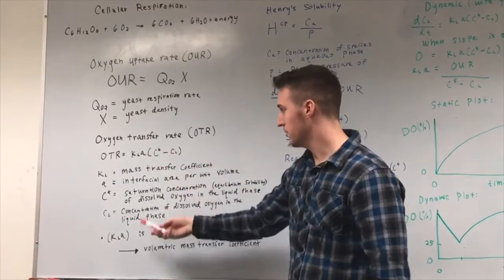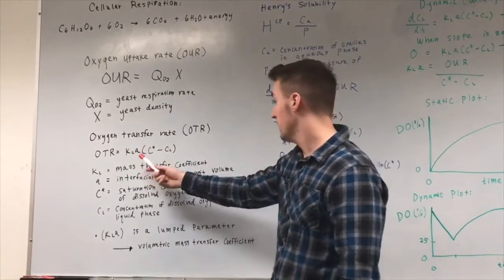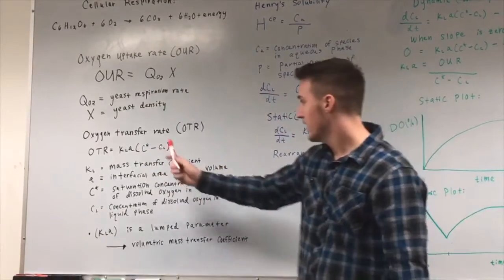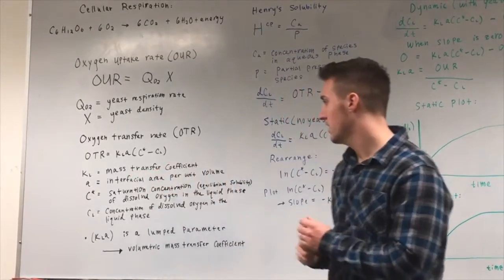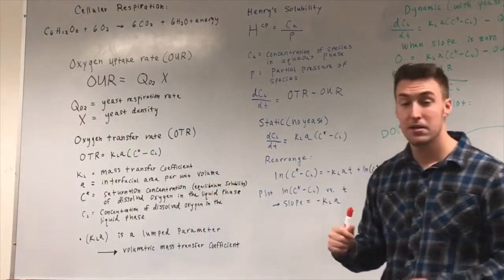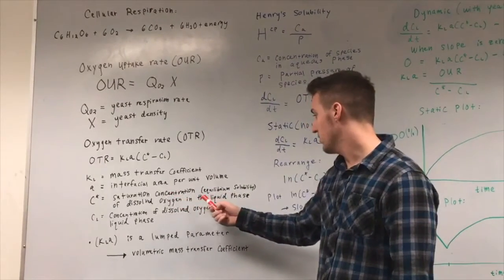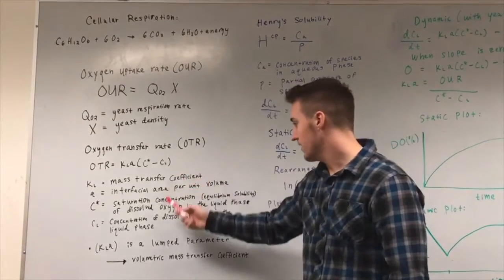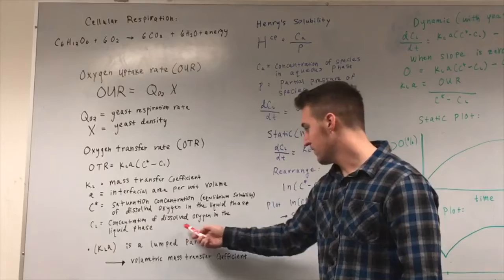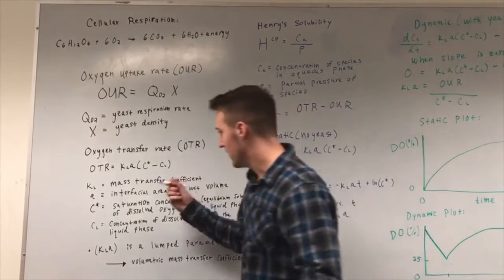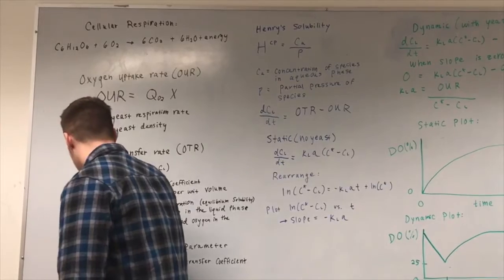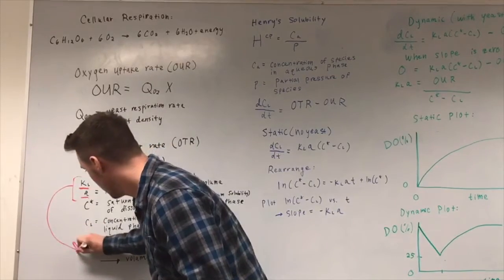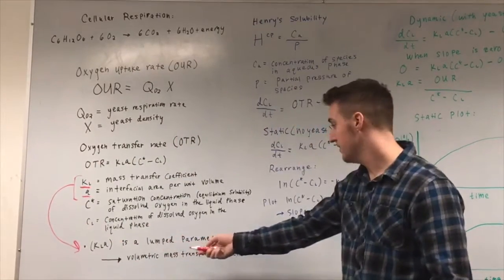The oxygen transfer rate OTR is given by OTR equals KL multiplied by a times (C* minus CL). KL is the mass transfer coefficient, a is the interfacial area per unit volume, C* is the saturation concentration or equilibrium solubility of dissolved oxygen in the liquid phase, and CL is the dissolved oxygen in the liquid phase.